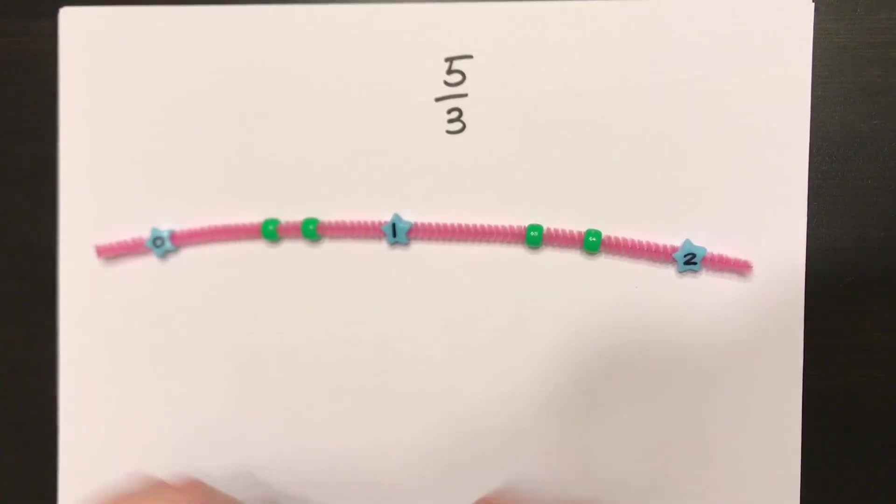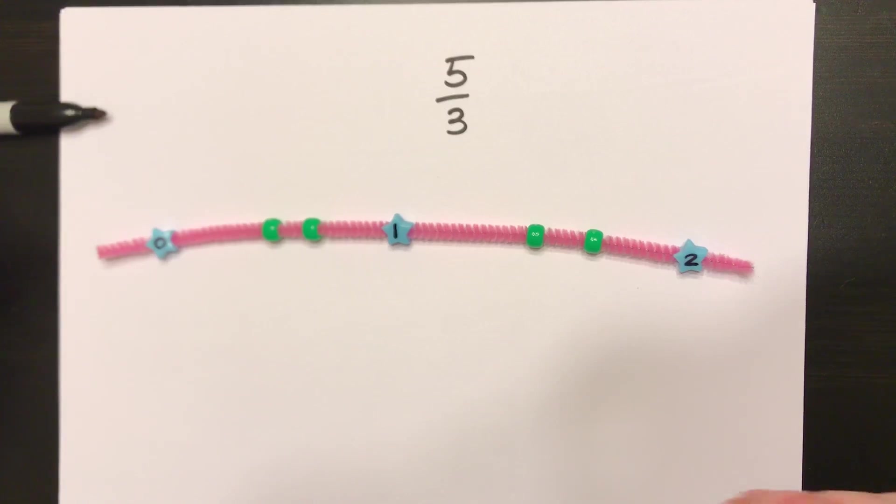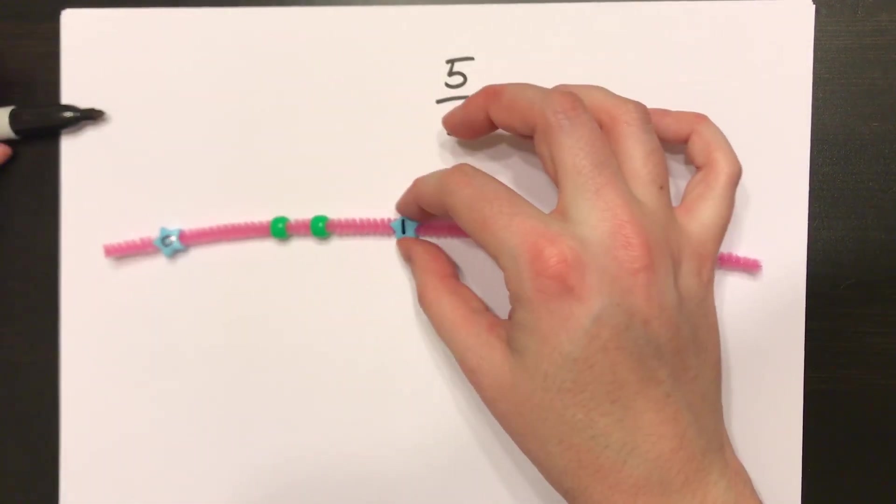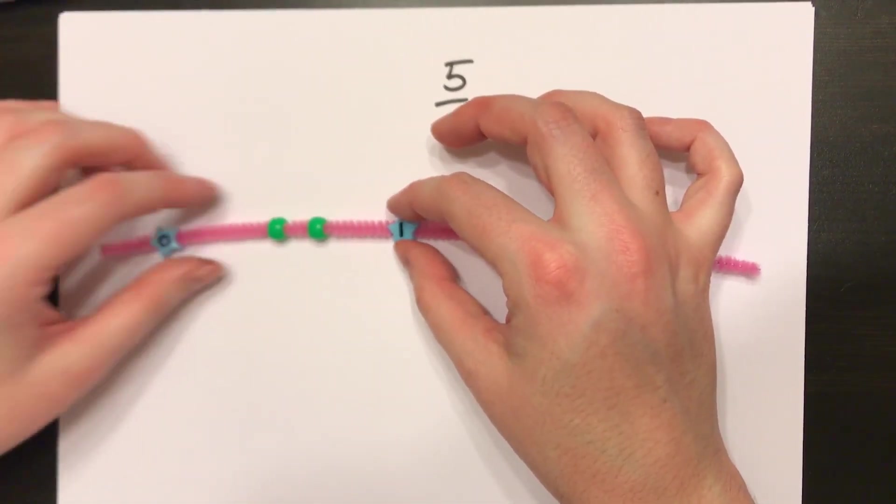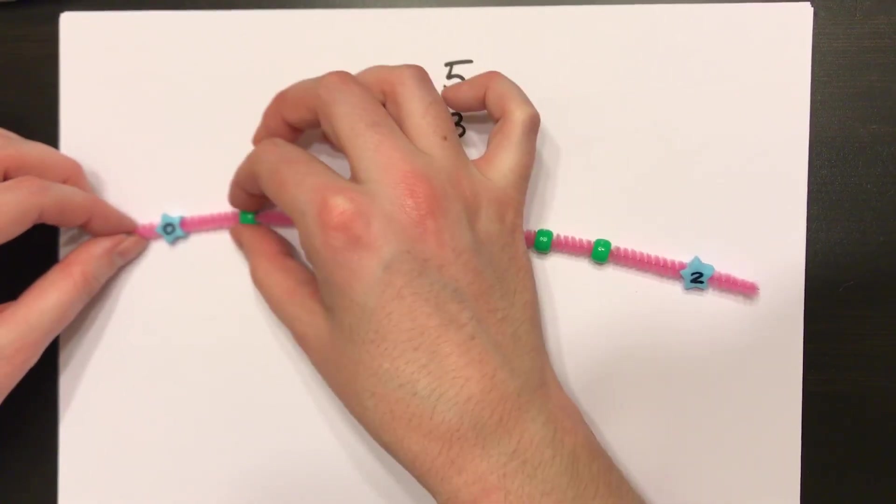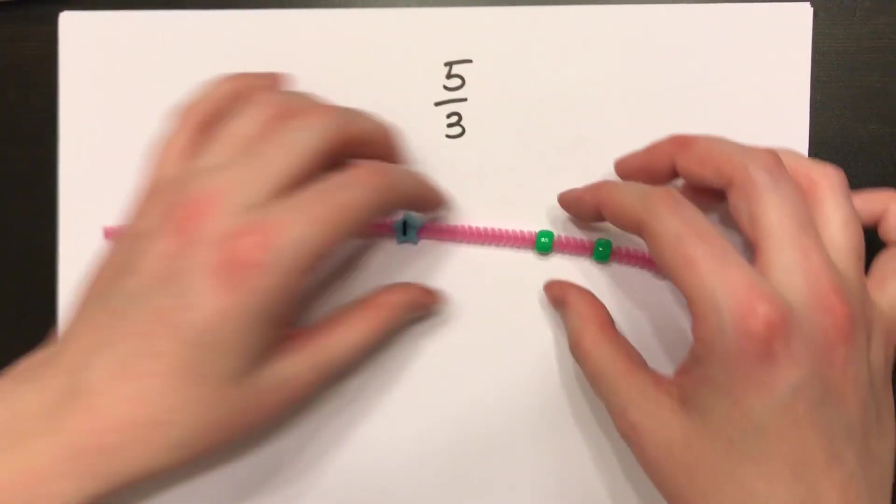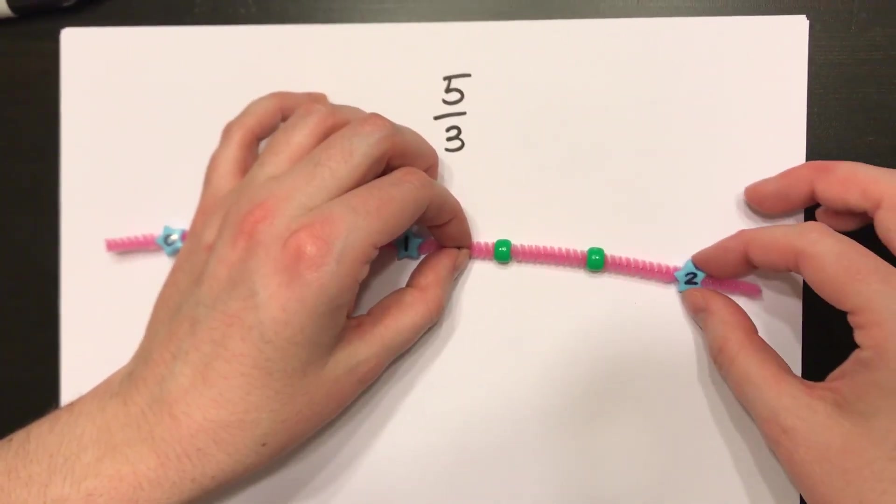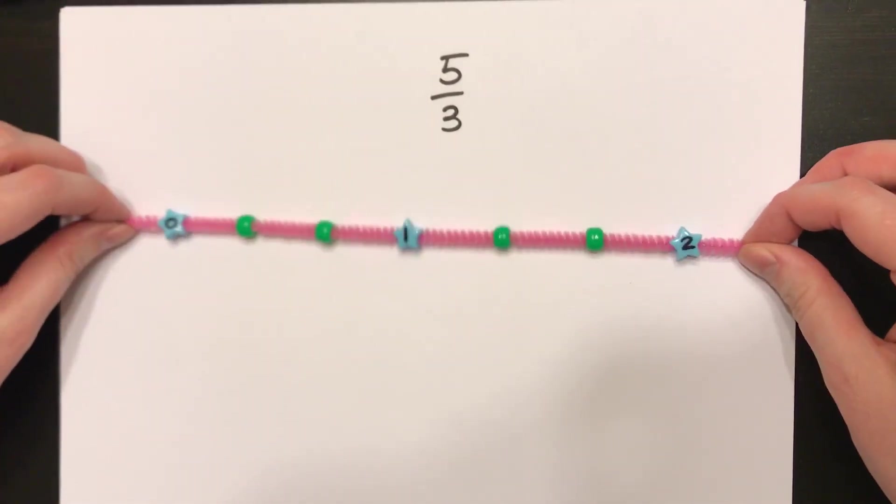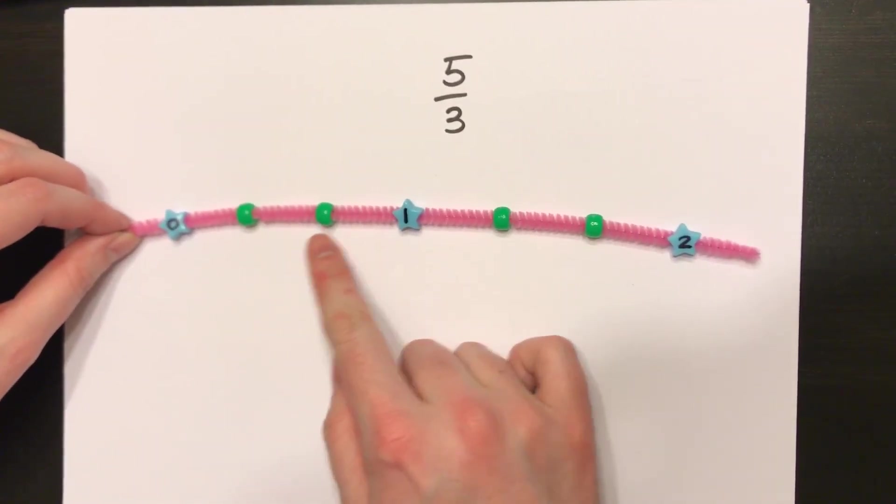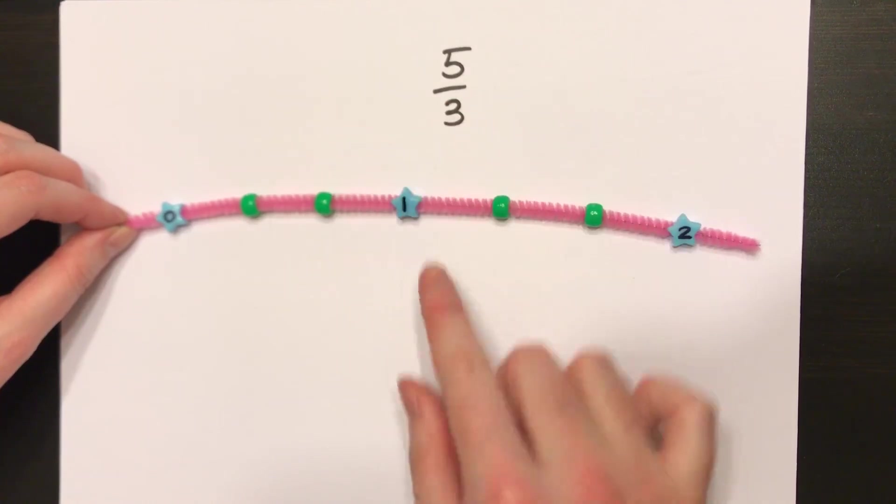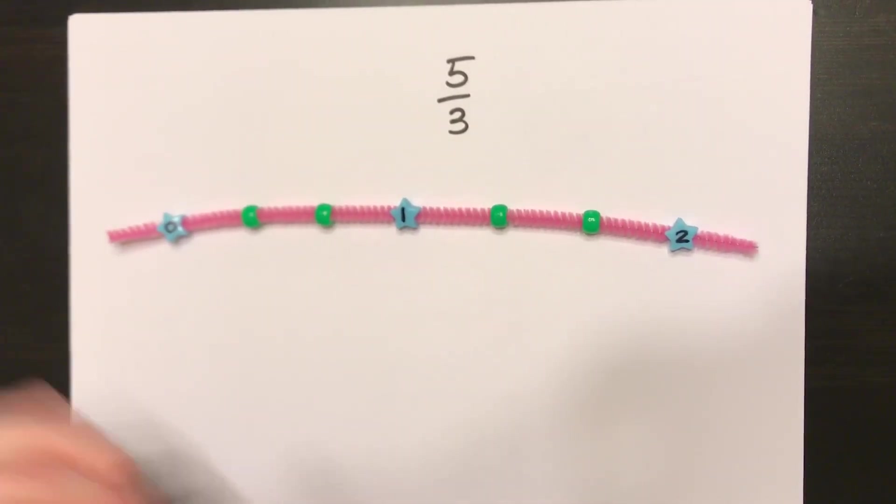Now here I don't have exactly thirds because they're not equal pieces, so I have to move the beads until I make them into equal pieces. Between 1 and 2, and I would say 1, 2, 3 equal pieces, 1, 2, 3 equal pieces. Perfect.